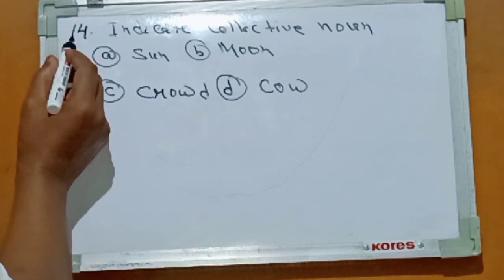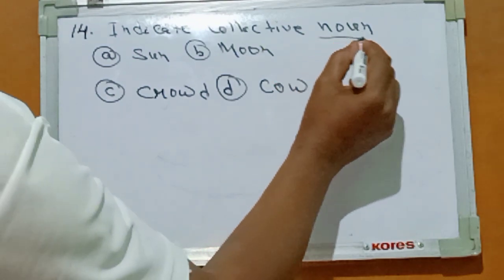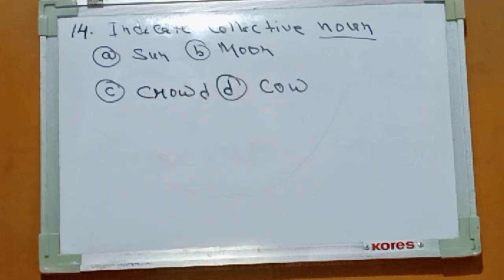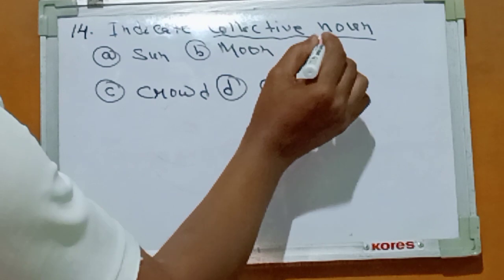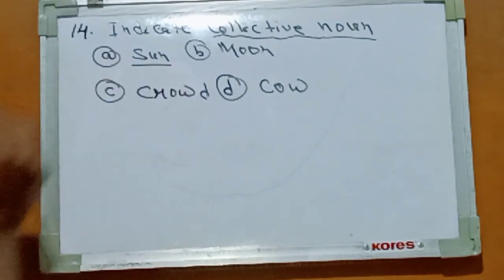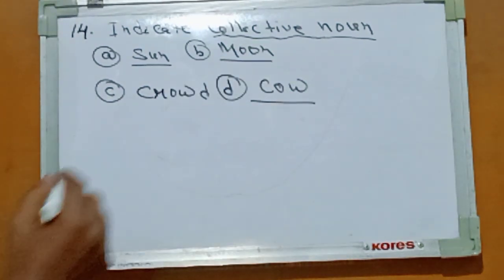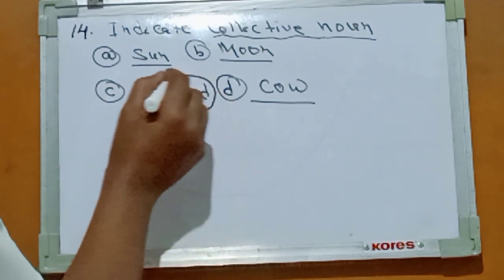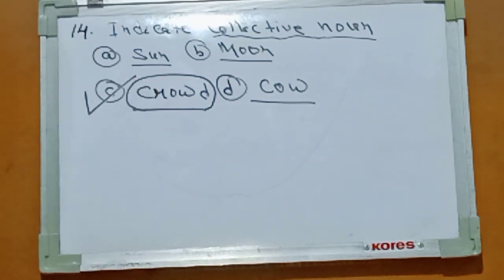Number fourteen: indicate the collective noun. You have to indicate the collective noun from the options. Sun is a single noun. Moon is also single. Cow is also single. Crowd is many — that's a group of people. So the right answer is Option C: crowd.